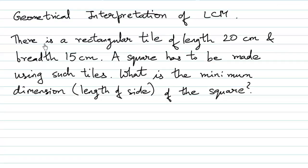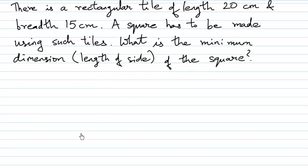We also have a geometrical interpretation of LCM. Let us take this example: there is a rectangular tile of length 20 cm and breadth 15 cm. A square has to be made using such tiles. What is the minimum dimension of the square — that is, what is the minimum length of the side of the square?